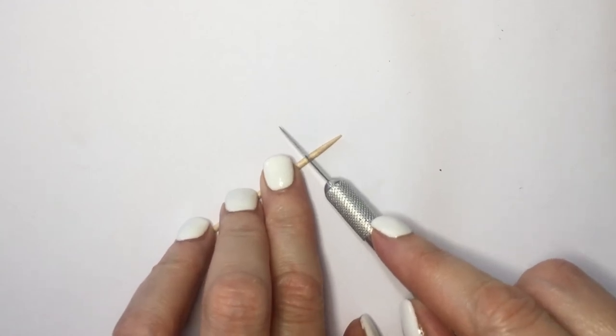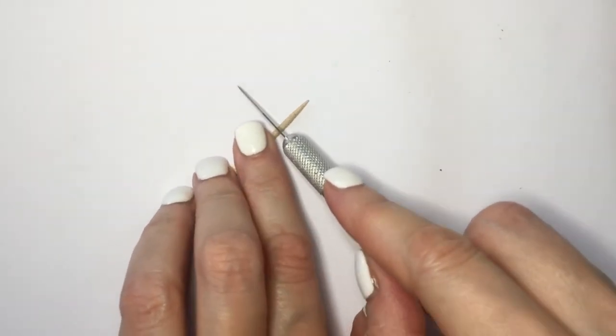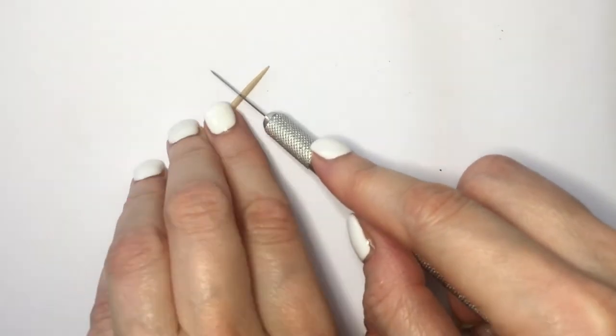So I'm just going to be cutting to get rid of the pointy part. I'm going to be rolling this as I cut for an even cut.